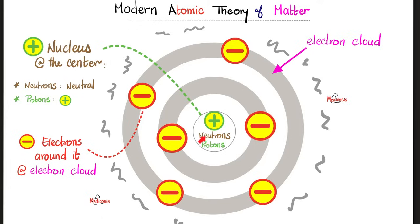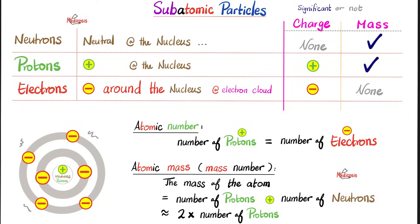The nucleus is positive. Why? Because it has neutrons, which have no charge, and protons, which have positive charge. So overall, the nucleus is positive. And around it, we have electrons, which are negative. The positive and the negative cancel each other out, and you end up with a neutral atom. Neutrons are neutral and located in the nucleus. Protons are positive, also in the nucleus. Electrons are negative, around the nucleus.